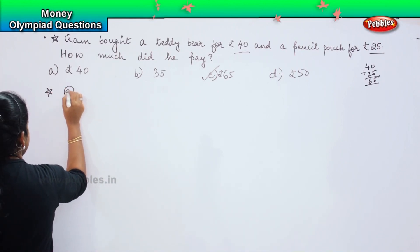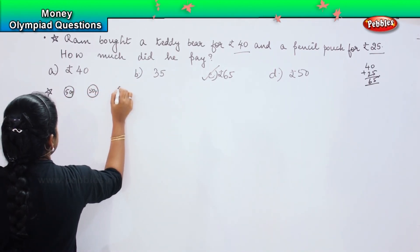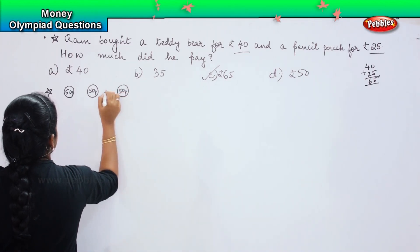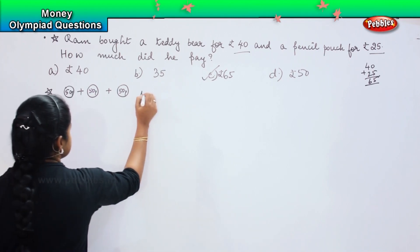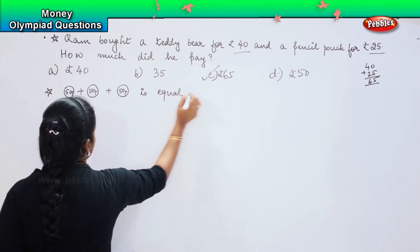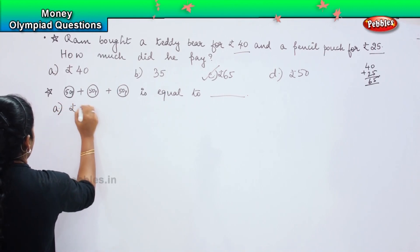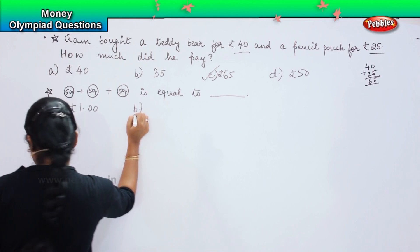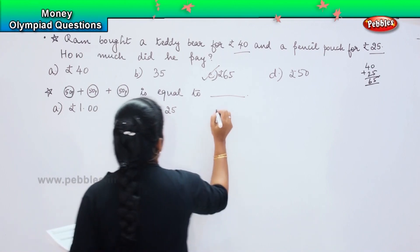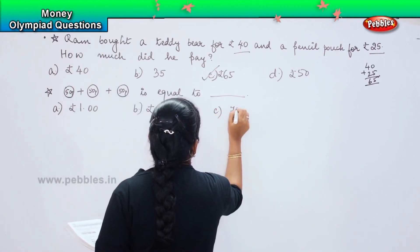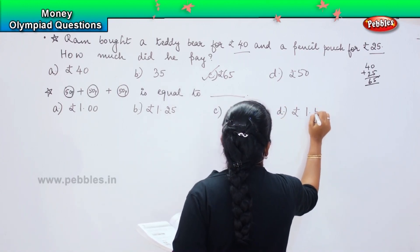3 coins of 50 paise is equal to dash. Your options are: Option A, 1 rupee; Option B, 1 rupee 25 paise; Option C, 75 paise; and Option D, 1 rupee 50 paise.